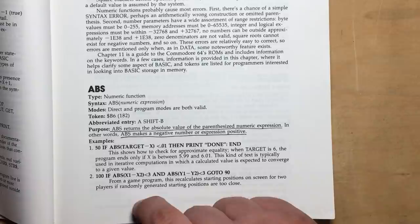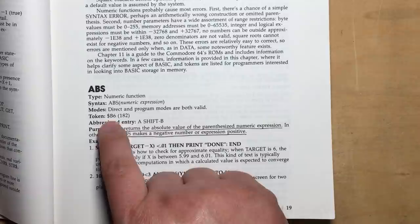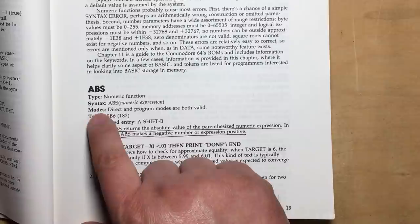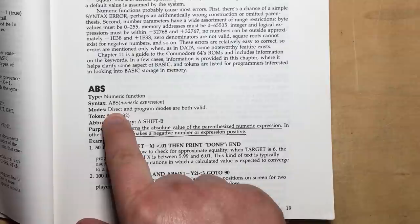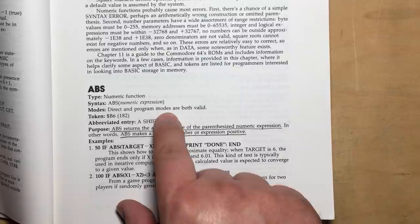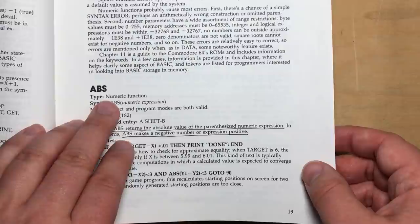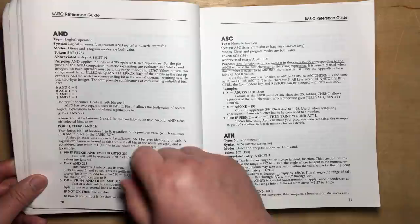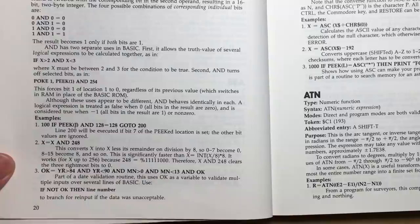Then there's this basic keyword dictionary. It goes through every basic keyword, but there's extra information here that is in the Programmer's Reference Guide. For example, the token, which is the hex numeric representation of each keyword is listed here. The abbreviated entry. And for example, informing that both direct and program modes. Direct mode being when you're at the command prompt or at the ready prompt and you type in an instruction like new or load. And program mode is where you put a line number first and then the instruction is executed later when you type run. So it just makes it clear what modes are available. And also this type clarifying this is like a numeric function.